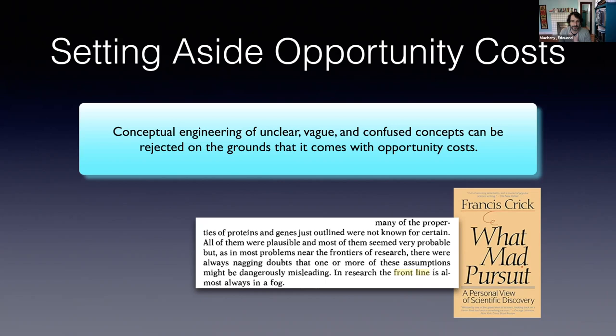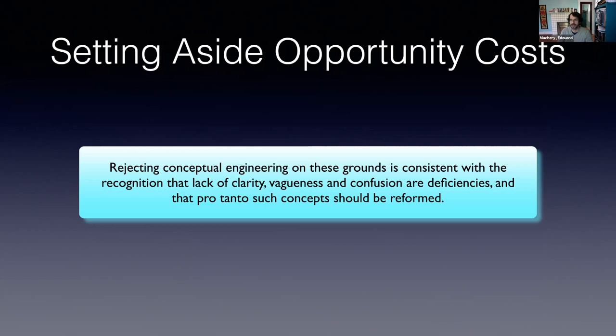I want to set aside this consideration because dismissing conceptual engineering on the grounds of opportunity costs is consistent with the recognition that lack of clarity, vagueness, and confusion are deficiencies, and that potentially such concepts should be reformed. Crick might think that everything considered they should not be reformed. What I want to investigate is a more radical view: that unclear, vague, and confused concepts are actually not deficient concepts at all — not simply that they are deficient but everything considered should not be reformed.